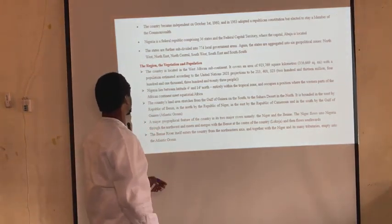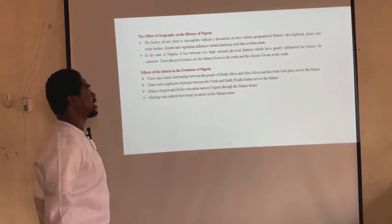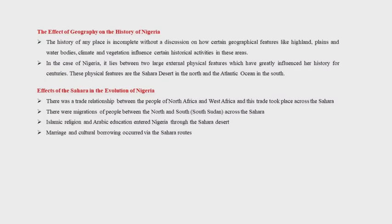Having looked at the region, vegetation, and population of Nigeria, our next subtopic is the effects of geography on the history and development of Nigeria. The history of any place is incomplete without a discussion of how geographical features like highlands, plains, water bodies, climates, and vegetations influence historical activities. In the case of Nigeria, it lies between two large external physical features which have greatly influenced its history for centuries: the Sahara Desert in the north and the Atlantic Ocean in the south.